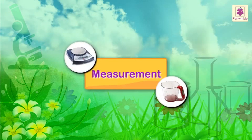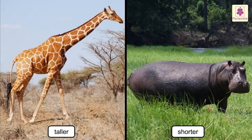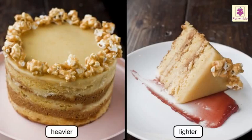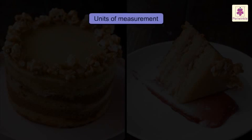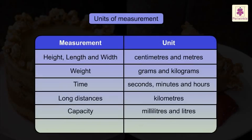Measurement. We use words like taller and shorter to compare height, and words like heavier and lighter to compare the weight of different things, animals or people on a daily basis. There are different units in which we measure height, weight, time, distance, etc. Let us study these different units of measurement today.